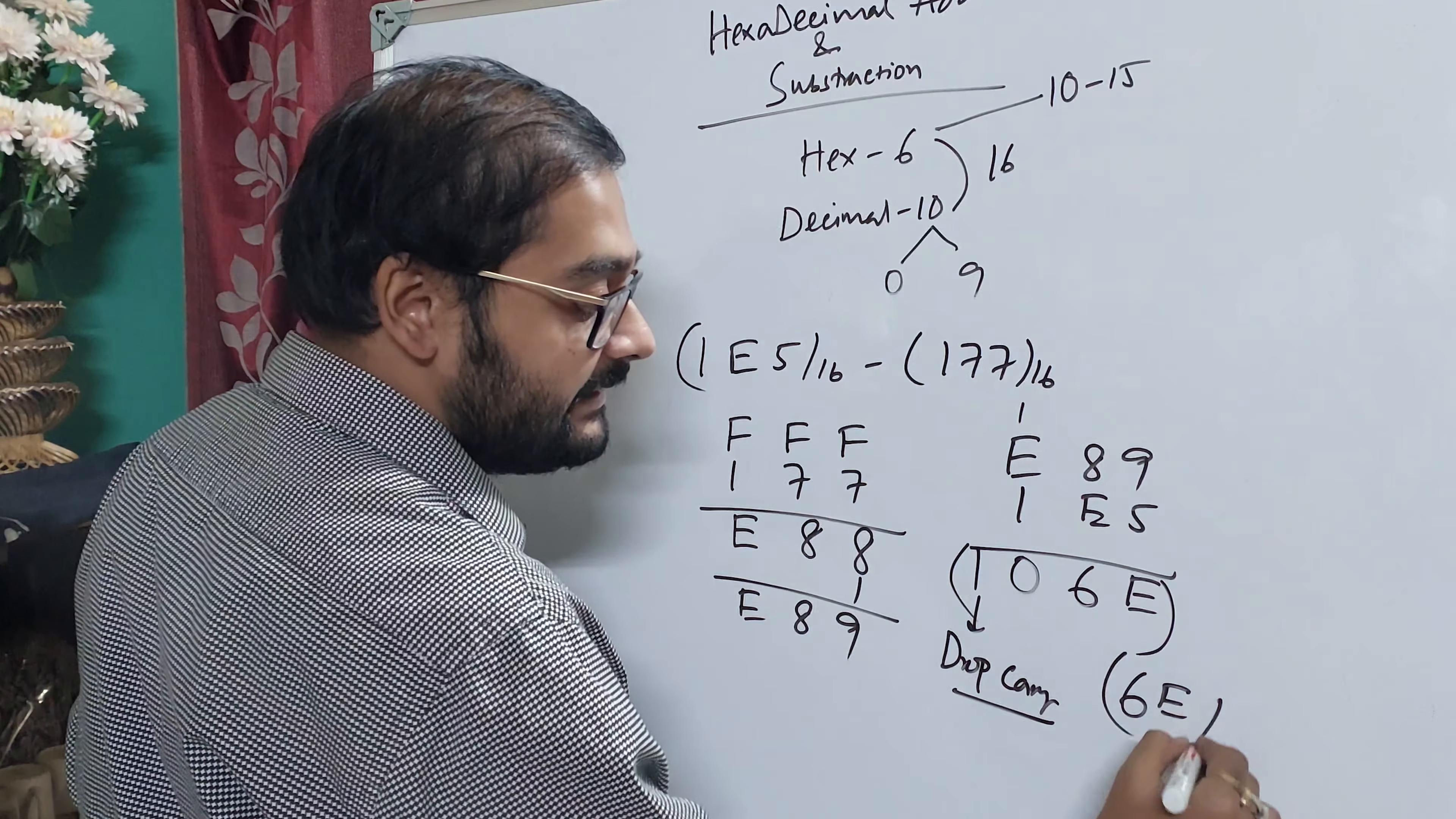17 minus 16 means I write 1, carry 1. 3 plus 1 is 4, 4 plus B. B value is 11, so 4 plus 11 equals 15. But 15 is less than 16, so we will have no carry. 15 means I write F, no carry.